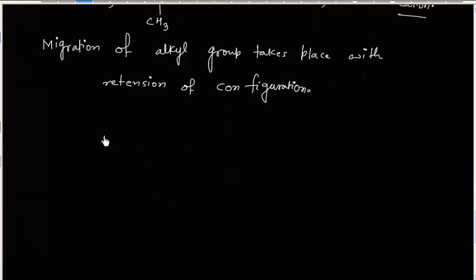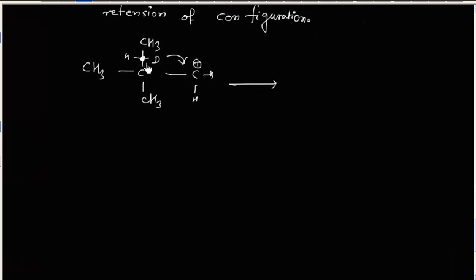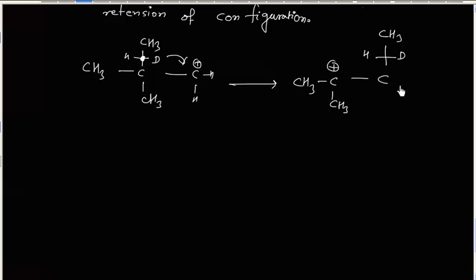In this case, if this group migrates, the configuration at this carbon will remain the same. Finally we will have this carbocation — it is a more stable 3° carbocation, whereas initially we had a 1° carbocation.